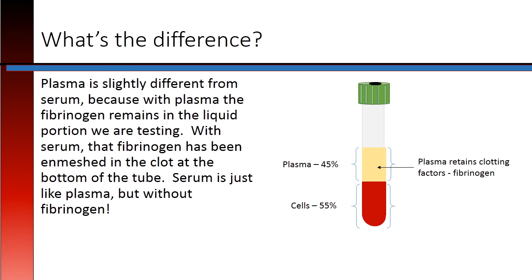Plasma is slightly different from serum because with plasma, the fibrinogen remains in the liquid portion we are testing. With serum, that fibrinogen has been enmeshed in the clot at the bottom of the tube. Serum is just like plasma, but without the fibrinogen.